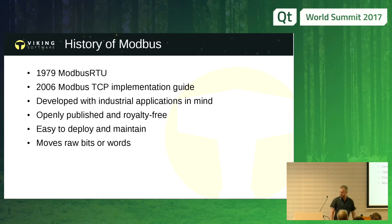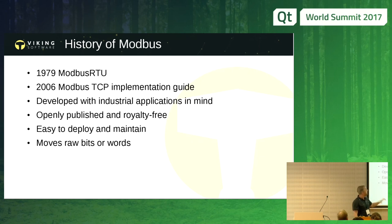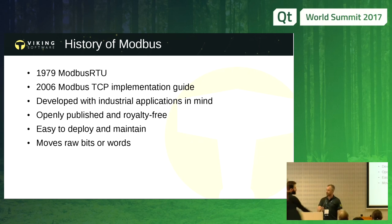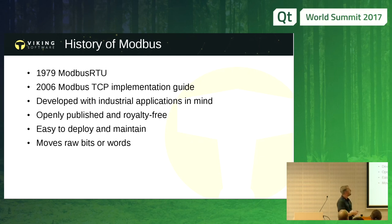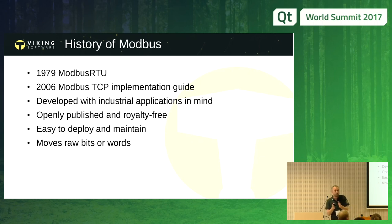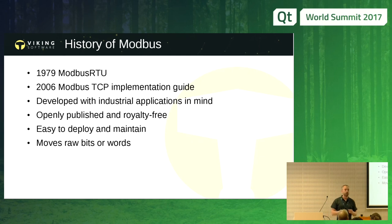One of the reasons it's so awesome and still here is that it was made for industrial applications at a time where having any automation at all was a great hit. And it's openly published — you can use it, you can develop it, you can implement it — and it's royalty-free. Everybody can make a Modbus device. It's easy to deploy, easy to maintain. It contains a small set of commands, and they're fairly self-describing in the documentation. Modbus moves raw bits or words — unlike CAN, you don't need to envelope everything and pass it by courier on a white horse.